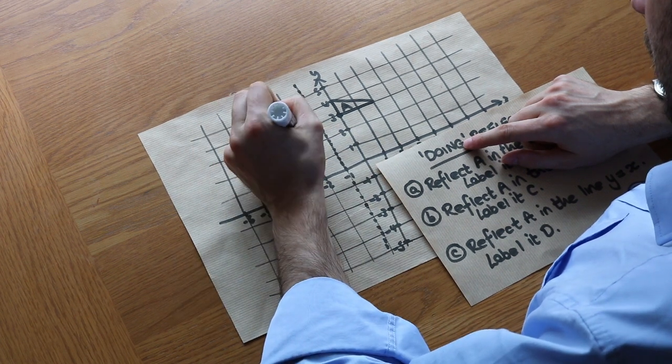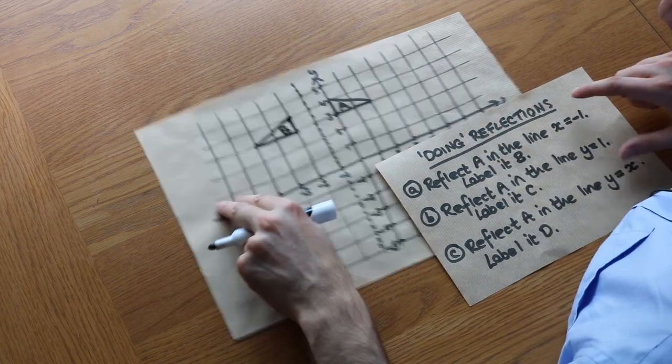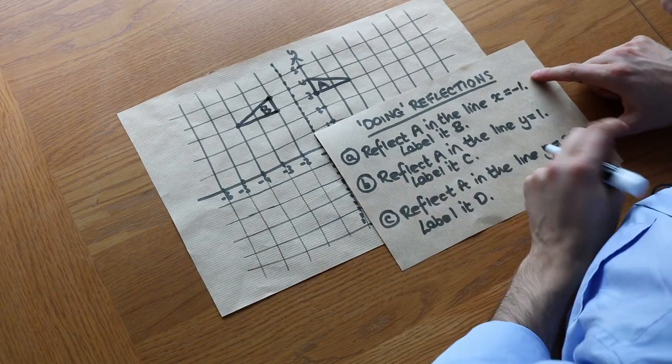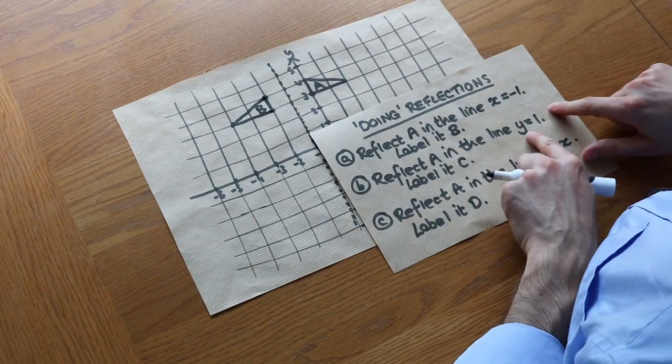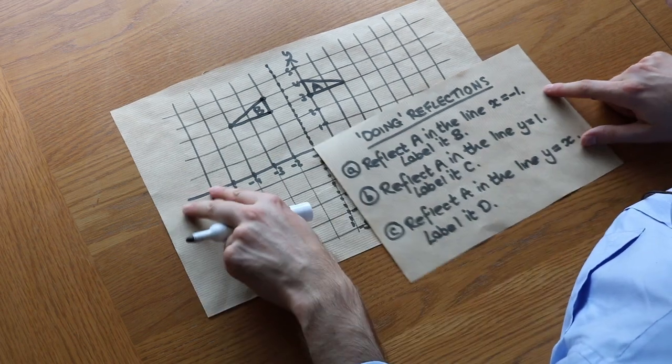We join those points up to form shape B — so that's the first one done. Now for part b: reflect A in the line y equals one, labelled C.